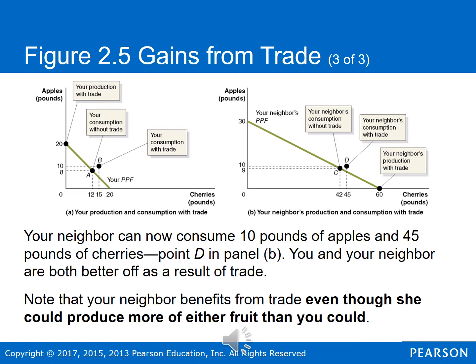That result shouldn't be too surprising because your neighbor can pick more cherries and apples than you — they're better at picking both. But let's look at what happens to your neighbor when she engages in trade with you after specializing. Your neighbor can now consume 10 pounds of apples because of the trade and 45 pounds of cherries — the 60 minus the 15 she traded you. That's point D in figure B, on the right. Point D is outside of her production possibility frontier, so even though she is better able to pick both apples and cherries than you, by specializing and trading, she's also made better off.